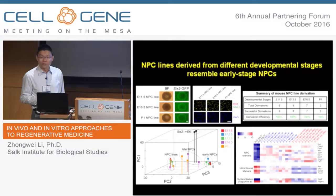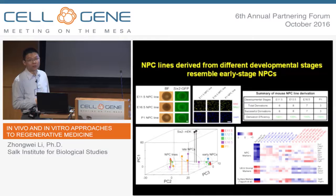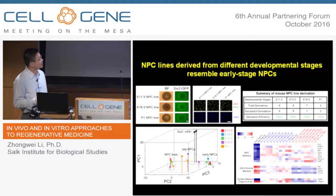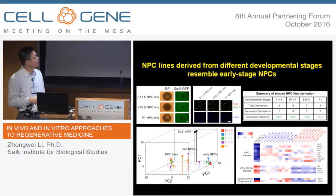Next we wanted to know how similar the long-term expanded MPC lines are to the in vivo primary cells. We did RNA sequencing using low-passage MPC lines and long-term passage MPC lines and compared them with freshly isolated primary cells from embryos. As you can see from the PCA analysis, early MPCs from E11.5 to E13.5 are clustered together and very similar. But after E16.5 days, they are quite different. Interestingly, all the MPC lines, regardless of which stage they were derived from, clustered together and are very similar to early-stage MPCs as shown on the PC1 and PC3 axes.